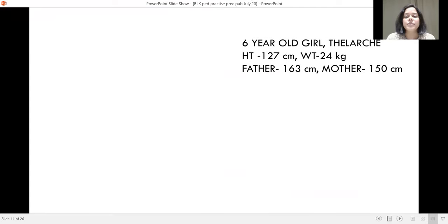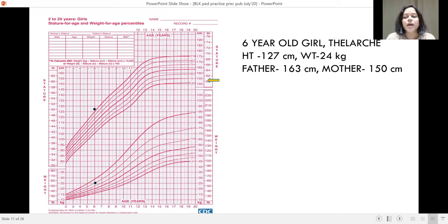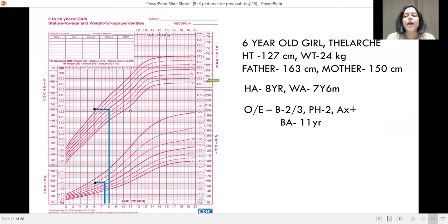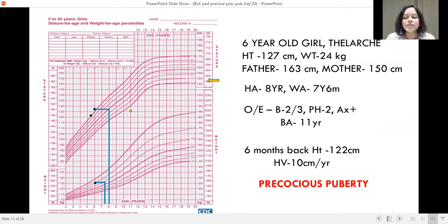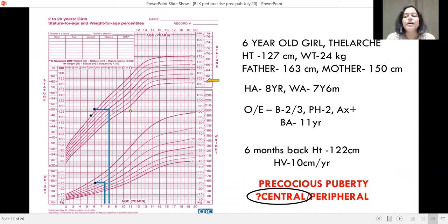Another case: a six-year-old girl presented with thelarche. She is quite tall for her age, with height age of an eight-year-old and weight age of seven and a half years. On examination she had thelarche Tanner stage 2 to 3, pubic and axillary hair present. Her bone age was quite advanced at about 11 years. A previous height taken six months back was 122 centimetres, giving a height velocity of 10 centimetres per year — quite advanced. This is definitely a case of precocious puberty, most probably central, supported by advanced bone age, high height velocity, and thelarche in a child less than eight years of age.